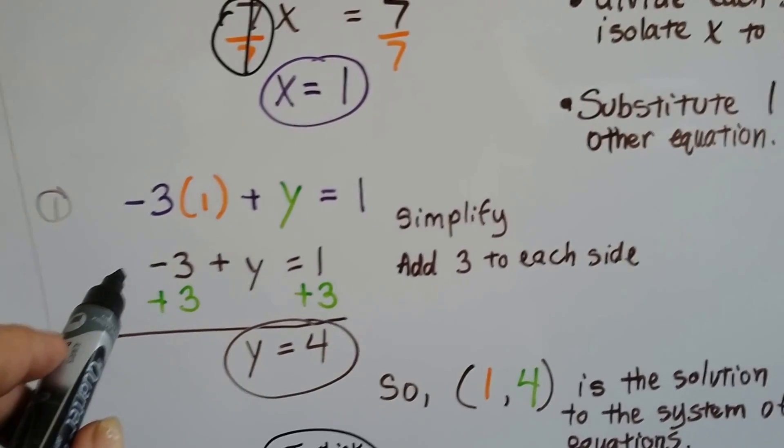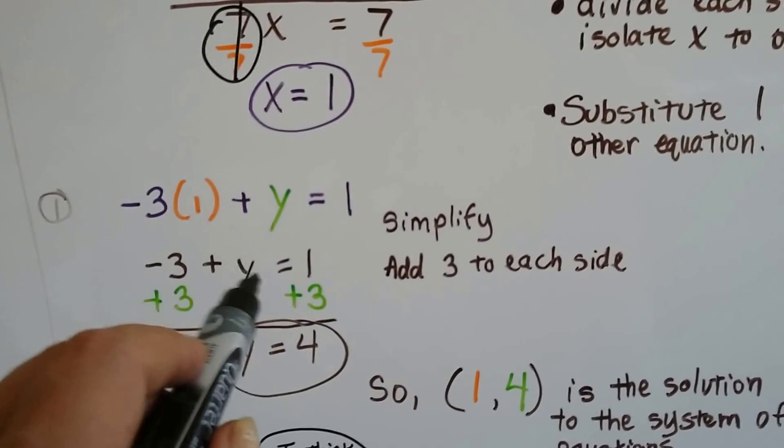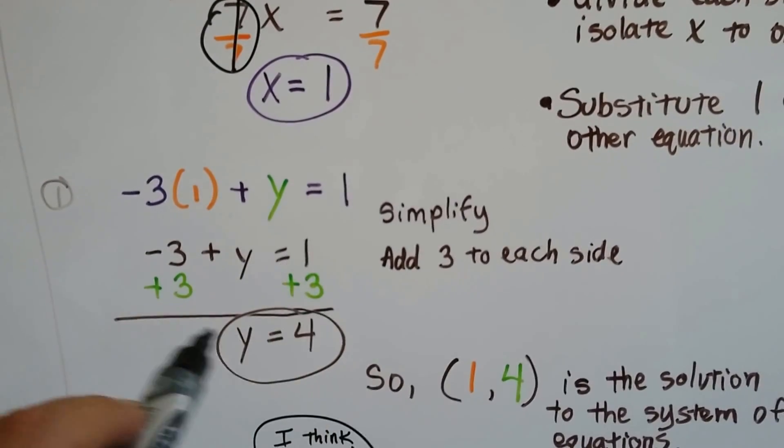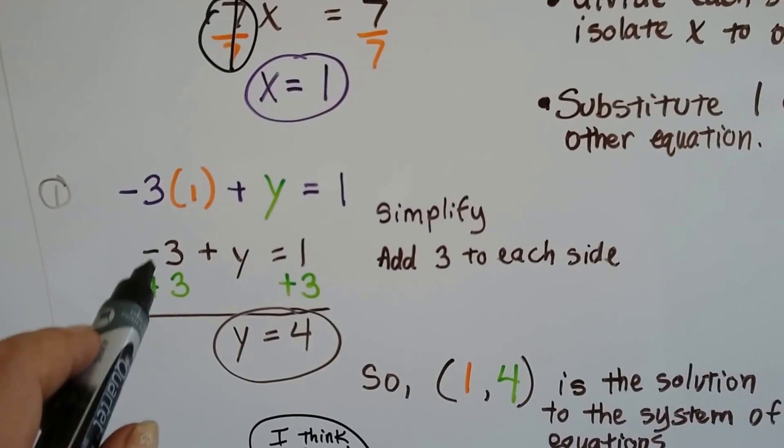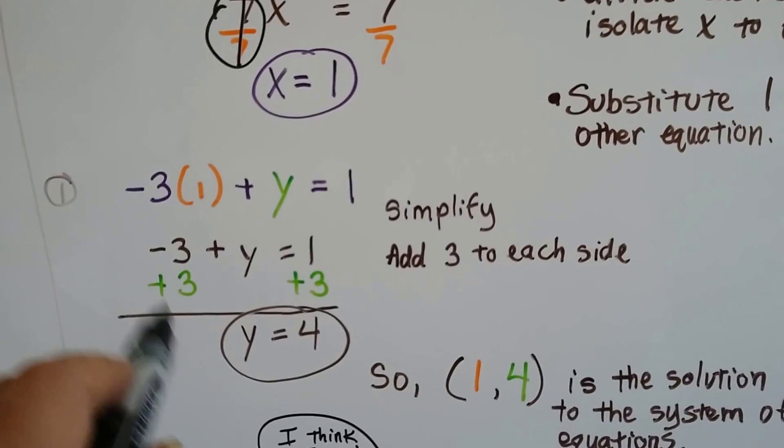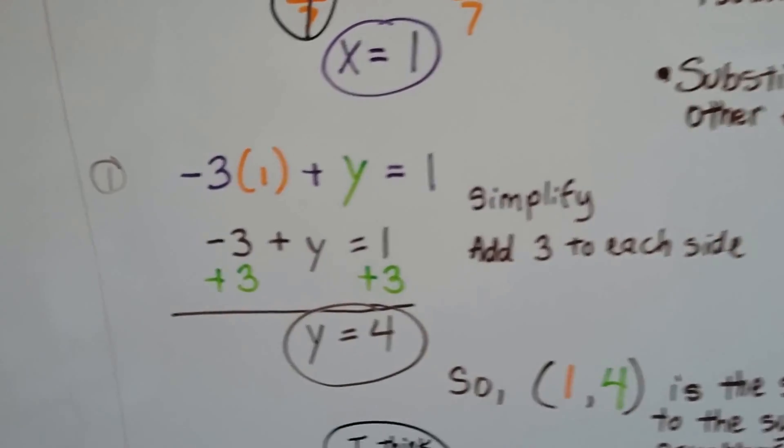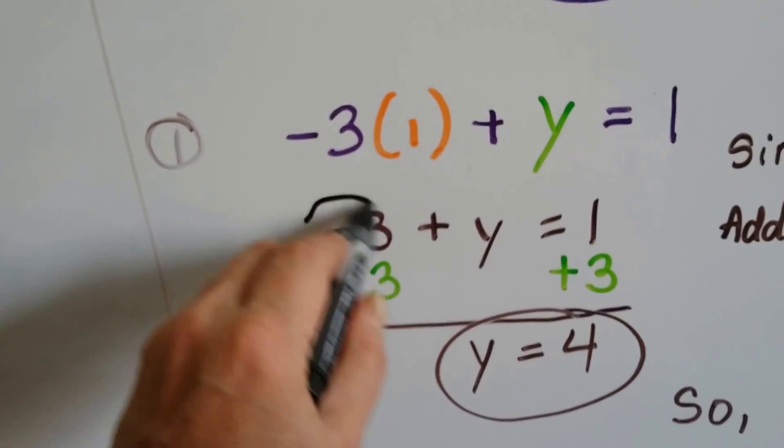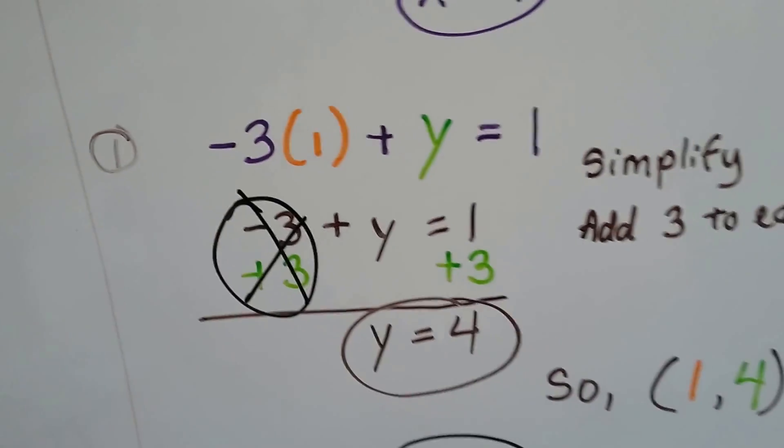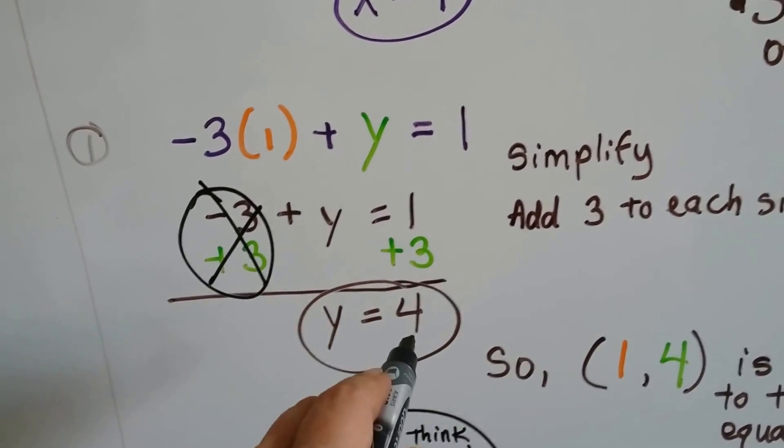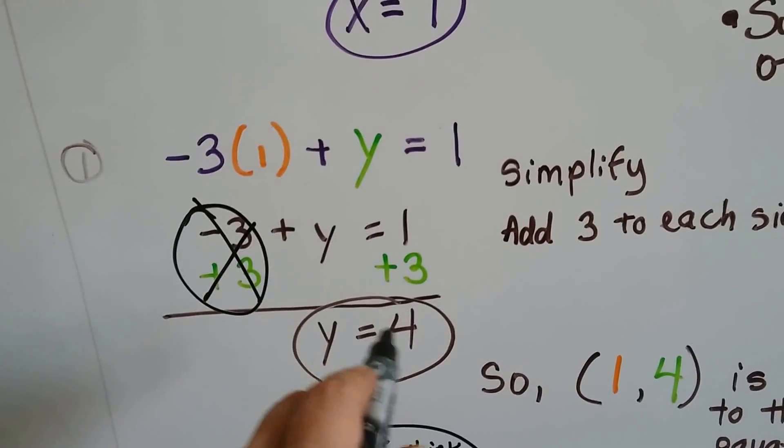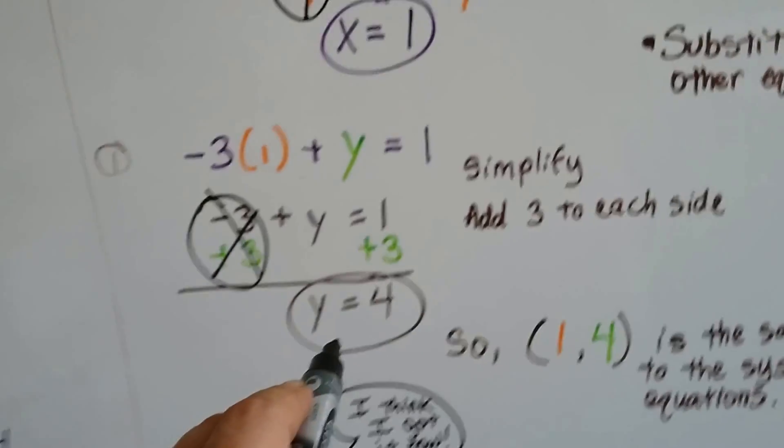So we've got our original equation. Negative 3 plus y equals 1. Now all we have to do is add 3 to each side to isolate that y. A negative 3 plus 3 creates a zero pair, so that's eliminated. 1 plus 3 is 4. The y drops down. y equals 4. x equals 1.